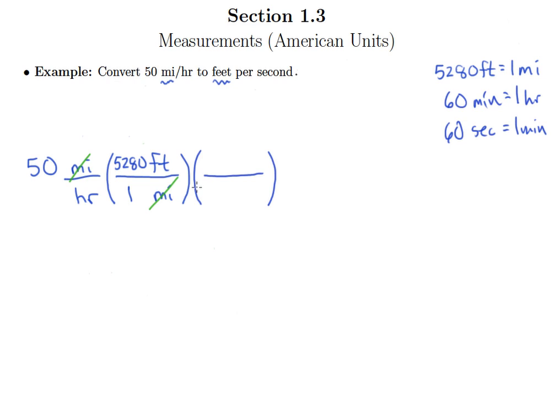Now so far, every time we've wanted to get rid of a particular unit, we put that unit in the bottom of the conversion factor. But understand the only reason we put it in the bottom, like right here, we put miles in the bottom of the conversion factor, was because miles were on top of the original, the original rate, and we wanted to get rid of them.